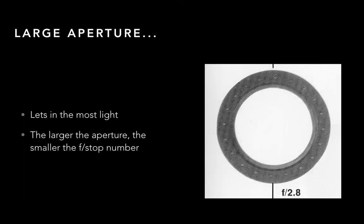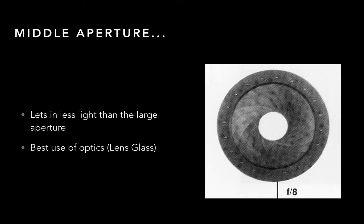Just to show you the mechanics of it, this is an f-stop on this particular lens of f/2.8. Again, that has to do with what glass is in front of it. This is actually a photograph of a wide open aperture — this lets in the most light. The larger the aperture, the smaller the f-stop number. Here we're showing f/8, which is about the mid-stop, and this lets in a lot less light than the larger aperture. But it's actually the best use of the optics.